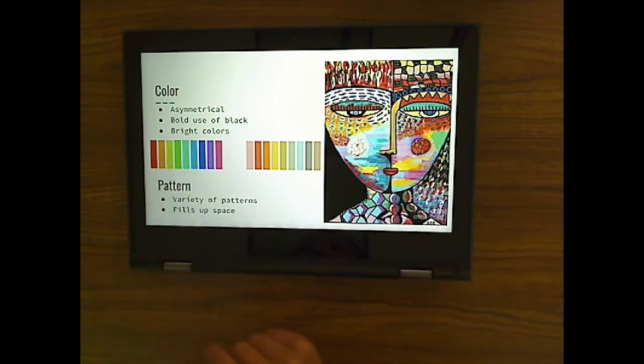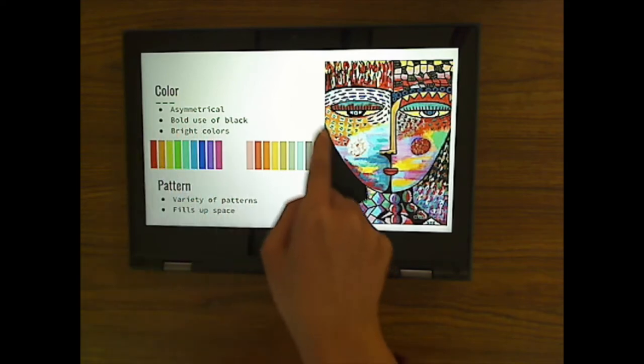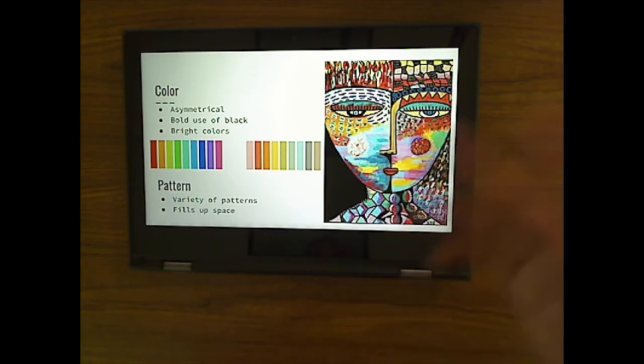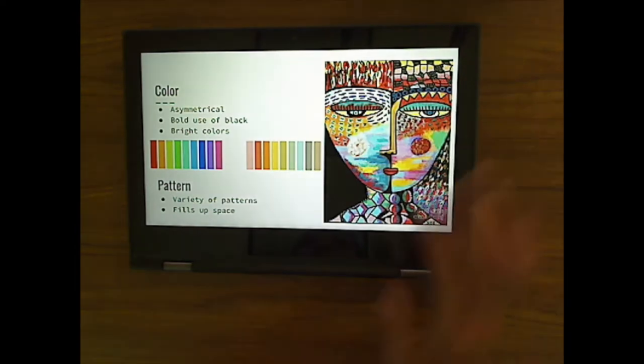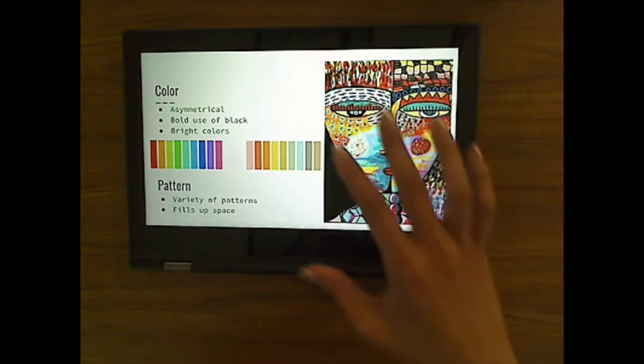Her colors are very bright. You can see this side of colors right here is very bright. Those are bright colors. These colors right here are what we call muted. Muted means that or it's the opposite of bright. That means they're kind of dull. And we can also see her use of pattern. There are a variety of patterns. Variety means just lots and lots of different kinds of patterns. And she fills up the space. She uses all those patterns and she fills up the entire canvas.